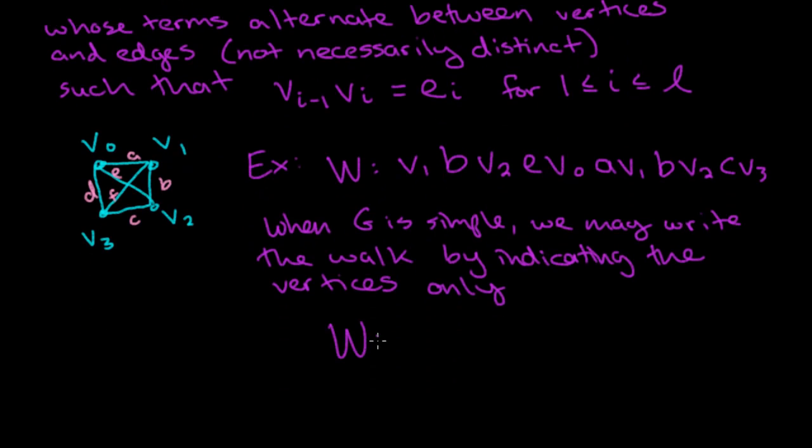So we could write this walk again. This walk would be vertex V1, vertex V2, vertex V0, vertex V1, vertex V2, and vertex V3. So we go along like this, V1, V2, V0, V1, V2, V3, and that's a walk.